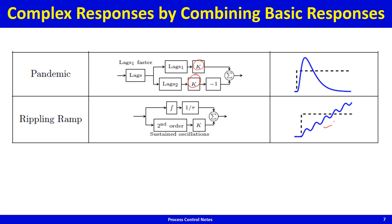A rippling ramp can be looked at as a ramp plus a sinusoid. When you add these two, you get a rippling ramp. A pure sinusoid can be obtained from a second-order system with a damping coefficient equal to zero. This looks like life — it keeps going up or down but with the usual daily ups and downs.